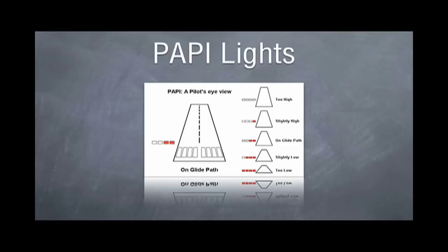Two white and two red are on your glide path, and all red, you're too low. So you can see how this differs from the VASI system.